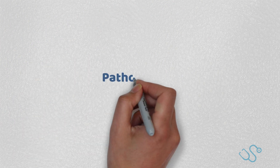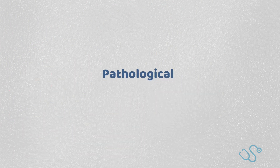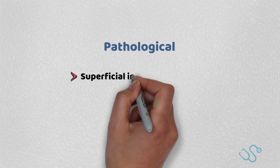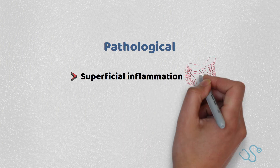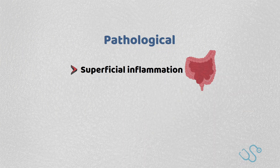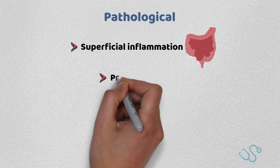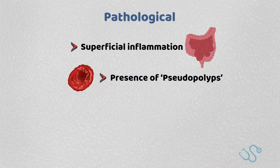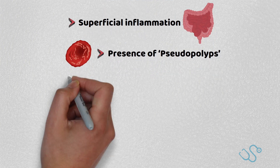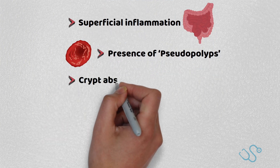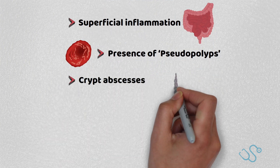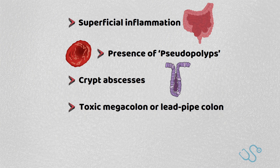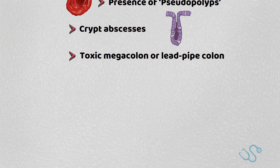You'll need to be aware of some of the pathological findings, which include mainly superficial inflammation with no extension beyond the submucosa, the presence of pseudopolyps and crypt abscesses, with some of the radiological features including toxic megacolon or lead pipe colon.